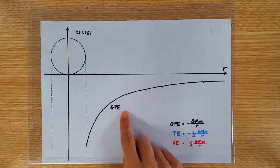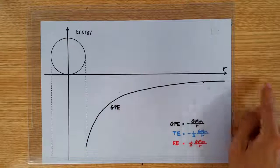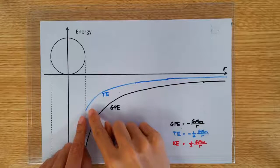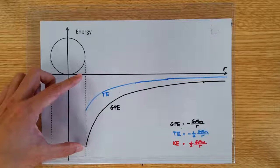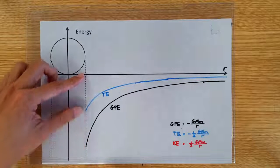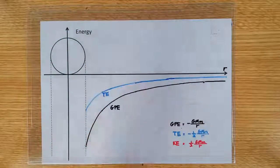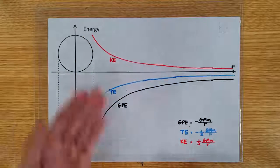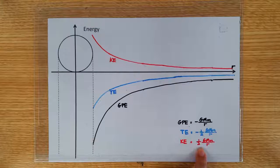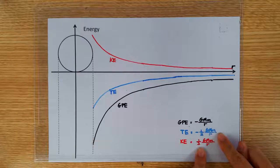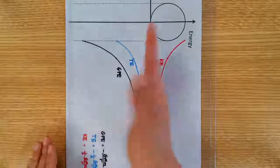We are very fond of presenting the orbital energies graphically. The GPE graph is the familiar 1 over R graph — most negative on the surface of the Earth, approaching zero towards infinity. The total energy is also a 1 over R graph, but with only half the value of the GPE, so at every position the total energy is half the value of GPE. The KE graph is also a 1 over R graph, but KE is always positive so it's drawn on the positive side. Since KE is half GMm over R, it's just a mirror image of the total energy graph.